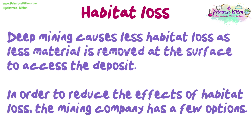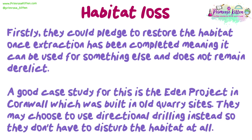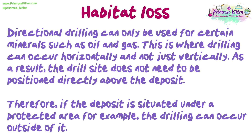In order to reduce the effects of habitat loss, the mining company has a few options. Firstly, they could pledge to restore the habitat once extraction has been completed, meaning it can be used for something else and does not remain derelict. A good case study for this is the Eden Project in Cornwall, which was built on old quarry sites. Directional drilling can only be used for certain materials such as oil and gas; this is where drilling can occur horizontally and not just vertically. As a result, the drill site does not need to be positioned directly above the deposit — so if the deposit is situated under a protected area, the drilling can occur outside of it.